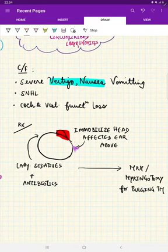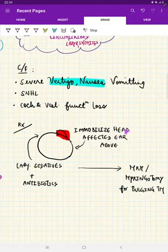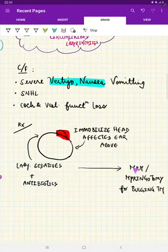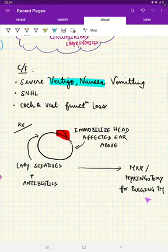Treatment simple: make the patient rested, then keep the head immobilized, and the affected ear should be above. Give them labyrinthine sedatives with antibiotics, and we can do modified radical mastoidectomy. And if at all there is pus filling in the inner ear from the inner ear reaching the middle ear and the tympanic membrane is bulging, we can do a myringotomy.